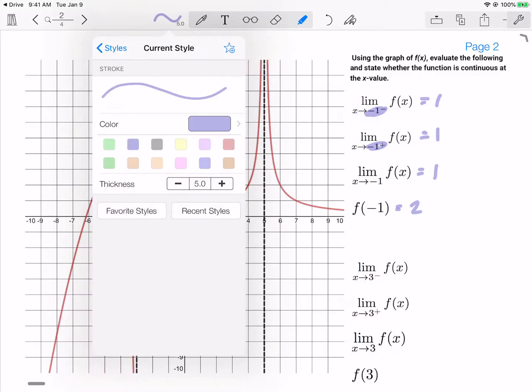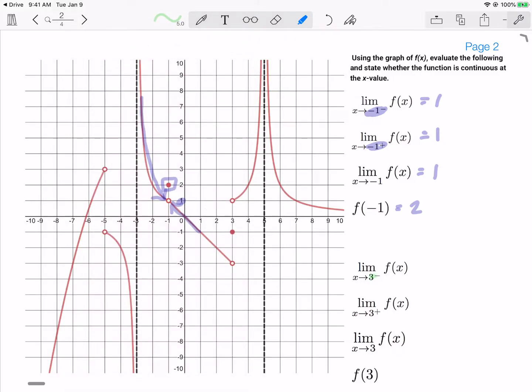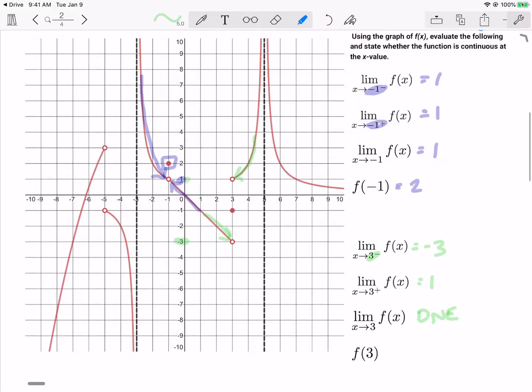Now if we move along and we go to 3, first from the left, it appears we are approaching a y value of negative 3 where that bottom hole is. And then when we come from the right, we are approaching a value of 1. Because negative 3 is not equal to 1, this limit does not exist.